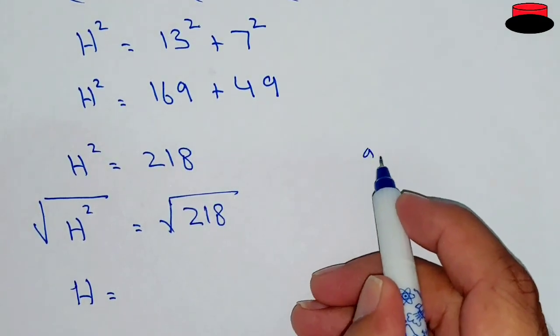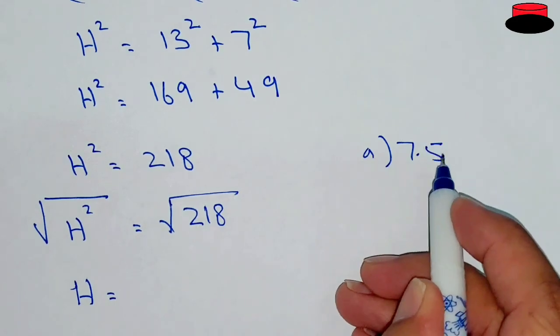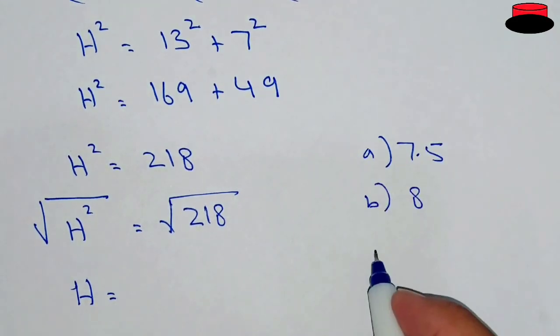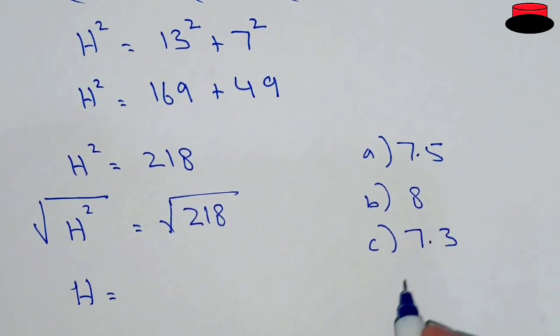Now here we are given four options: option A is 7.5, option B is 8, option C is 7.3, and option D is 7.6.